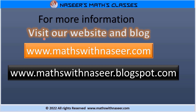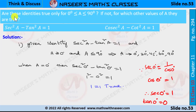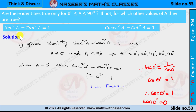For more information visit our website and blog www.mathswithnaseer.com and www.mathswithnaseerblogspot.com. Now we are going to solve Think and Discuss, page number 294, Chapter 11 Trigonometry: Are these identities true only for 0° ≤ a ≤ 90°? If not, for which other values of a are they true?